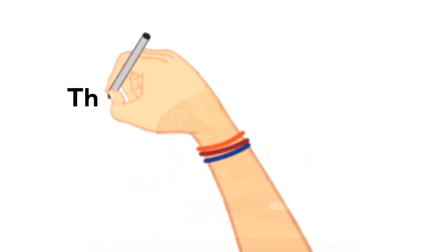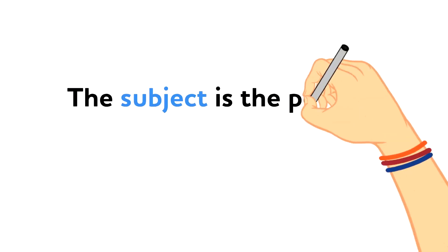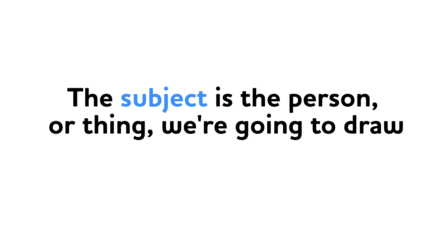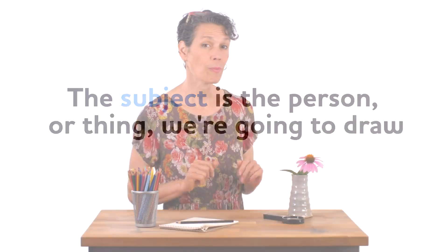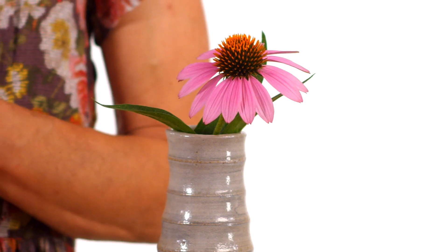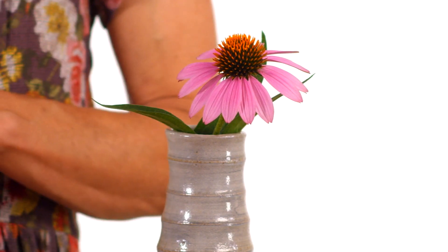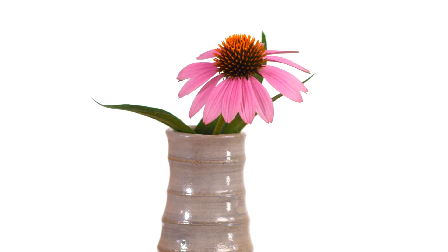Before we can make observational drawings, we have to first choose what we call a subject. The subject is the person or the thing that we're going to draw. For my subject, I chose this beautiful flower. It's called Echinacea, and I got this one right out of my garden. Isn't it lovely?